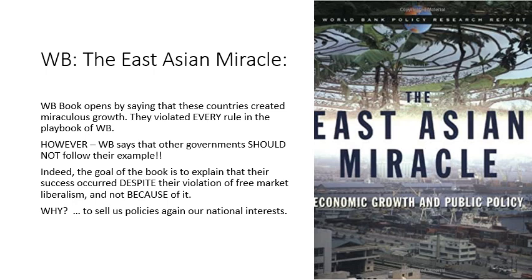This book was written by the World Bank itself, and it opens with a paragraph which says that these Asian countries did everything against the rules — they broke every rule of the Washington Consensus and they achieved miraculous growth. So why is the World Bank saying this? This book is very subtle. It says that even though these governments broke the rules and did not follow the Washington Consensus, other governments should not follow their example — that there were some special circumstances in Asia which allowed this to succeed, and also that their success is really not because they broke the rules but because they followed the sound stable policies of the Washington Consensus. So this is a rather absurd lesson, and the goal of this book was to make sure that nobody tries to follow their example.